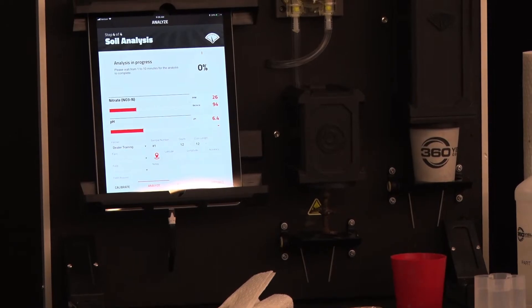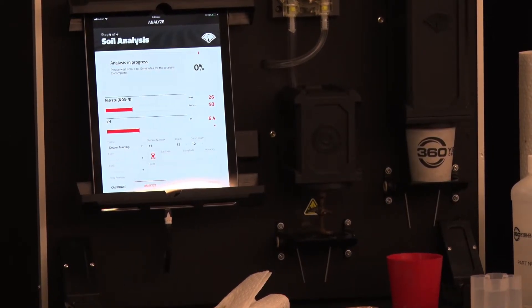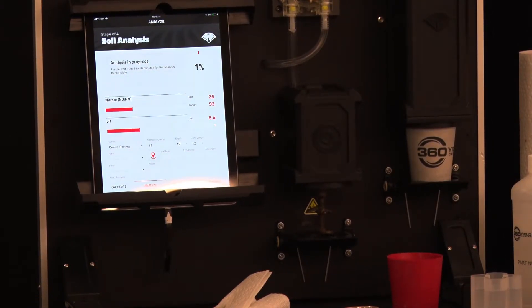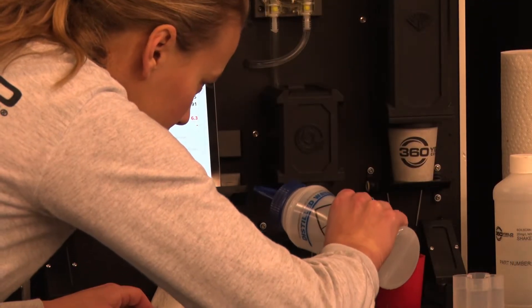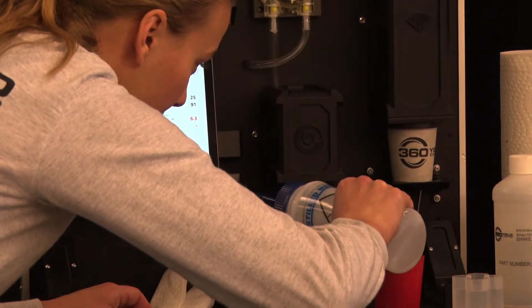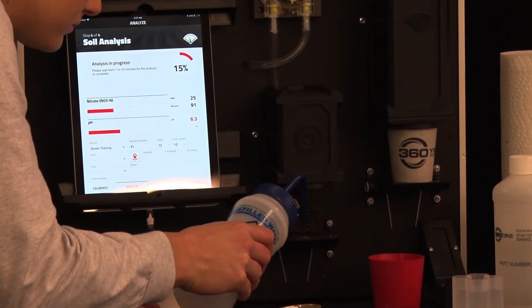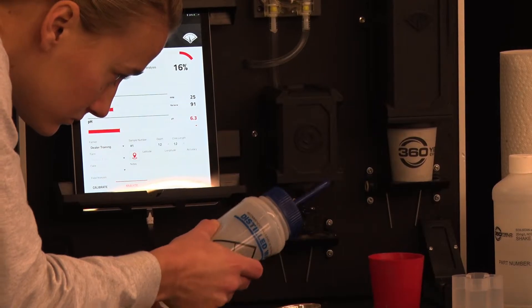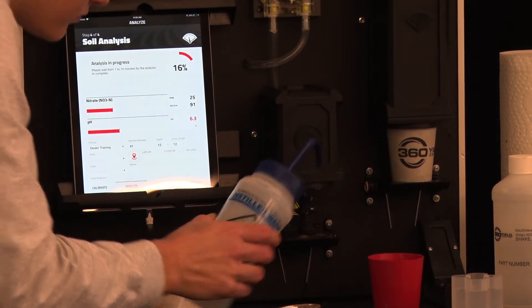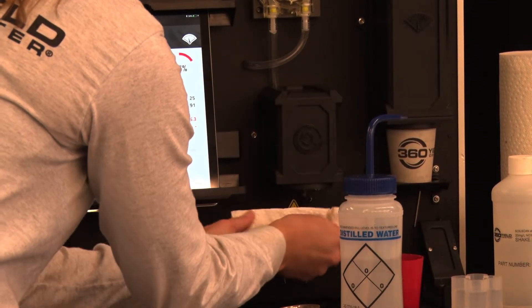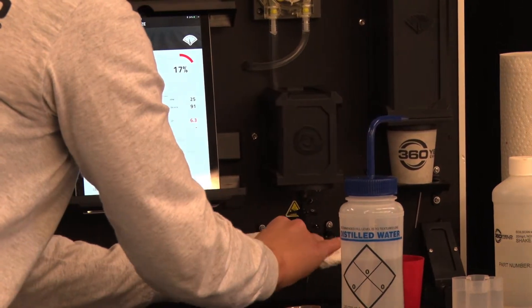The sensors will continue reading the slurry until they get 10 of the same reading and then it will be done. While it is reading that slurry if you're going to be doing another sample you'll want to clean your mixing rod. It is important to clean the mixing rod and the sensors between every sample. Use distilled water when cleaning.